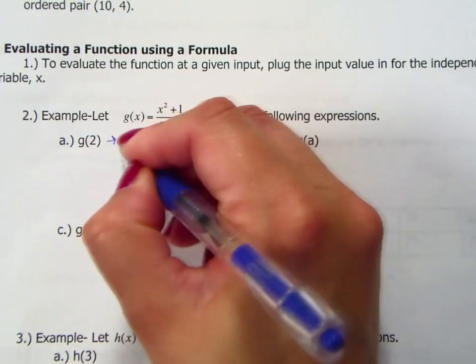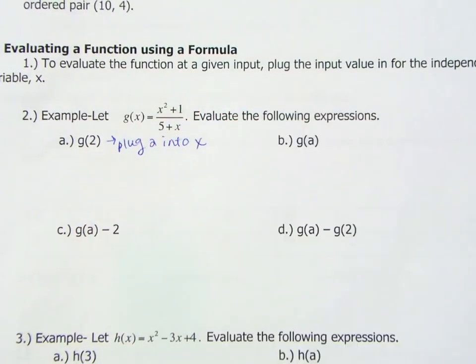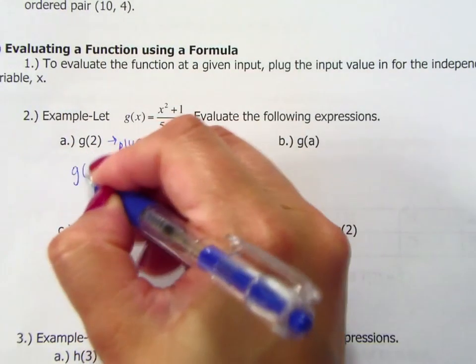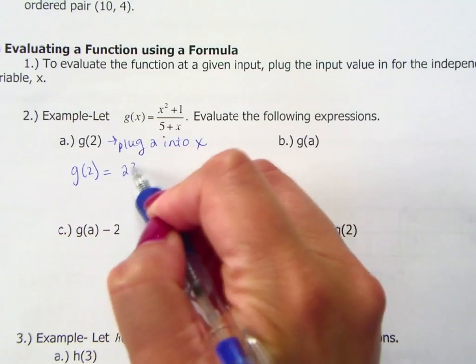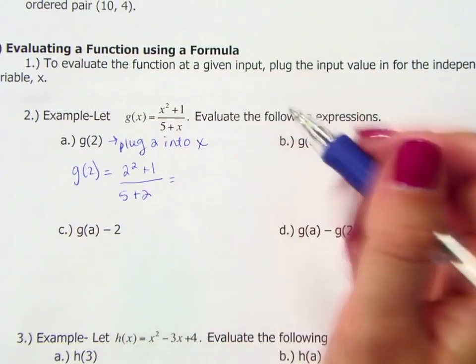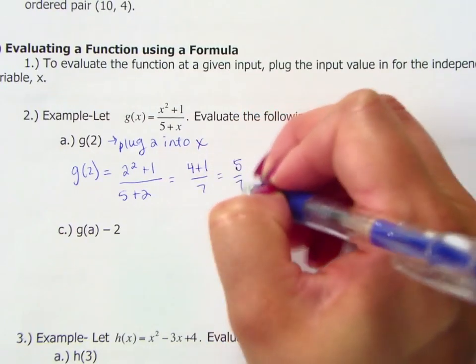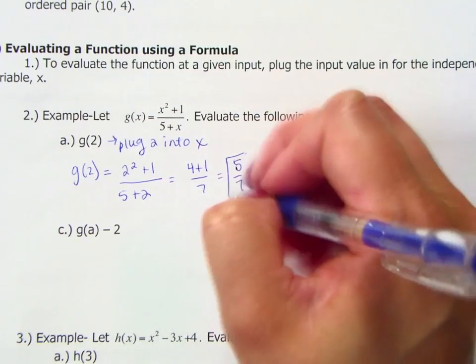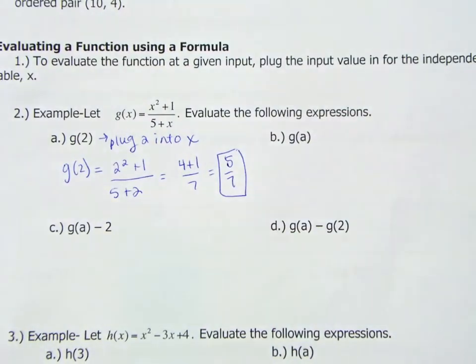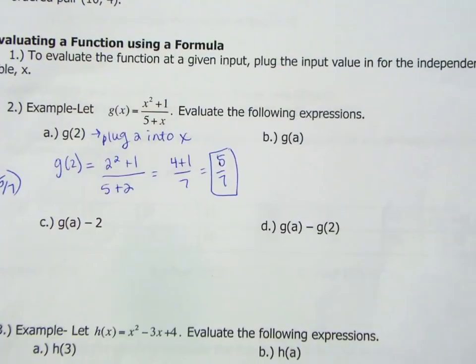So g(2), this means plug 2 into x. So g(2) will equal 2 squared plus 1 over 5 plus 2. Then simplify. So this is 4 plus 1 over 7. g(2) equals 5 over 7. Corresponding ordered pair, it doesn't ask us to do this, but a corresponding ordered pair then for this function would be (2, 5/7).